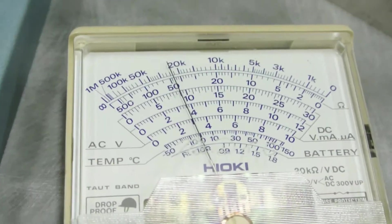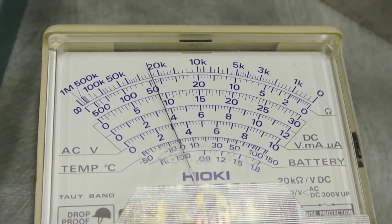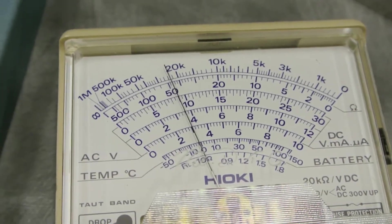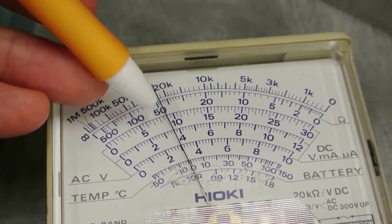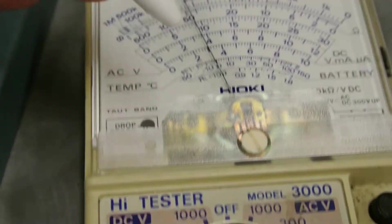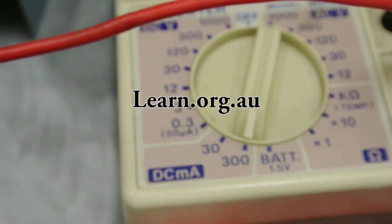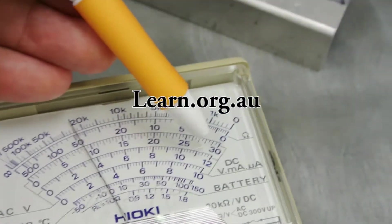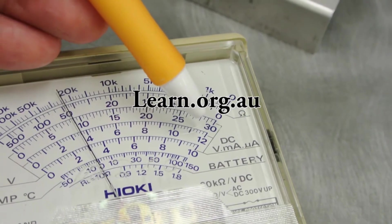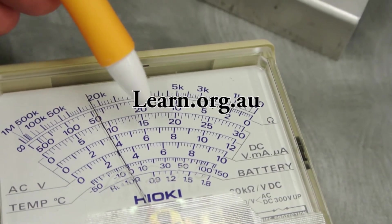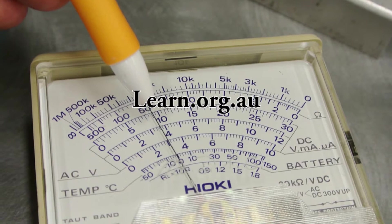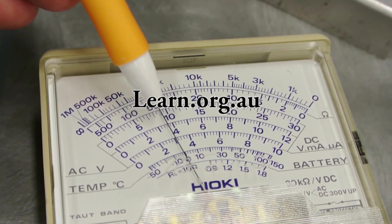The current meter is reading 90 milliamps approximately. We're on the 300 milliamps DC range, and that means multiplied by 10, that's going to be 300, 250, 200, 150, 100. We're 10 milliamps underneath the 100.